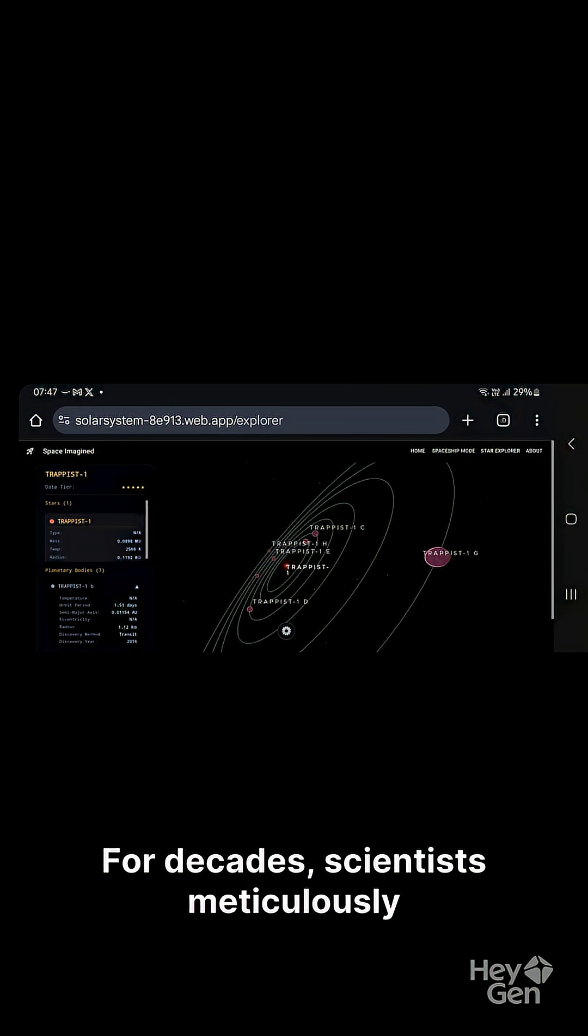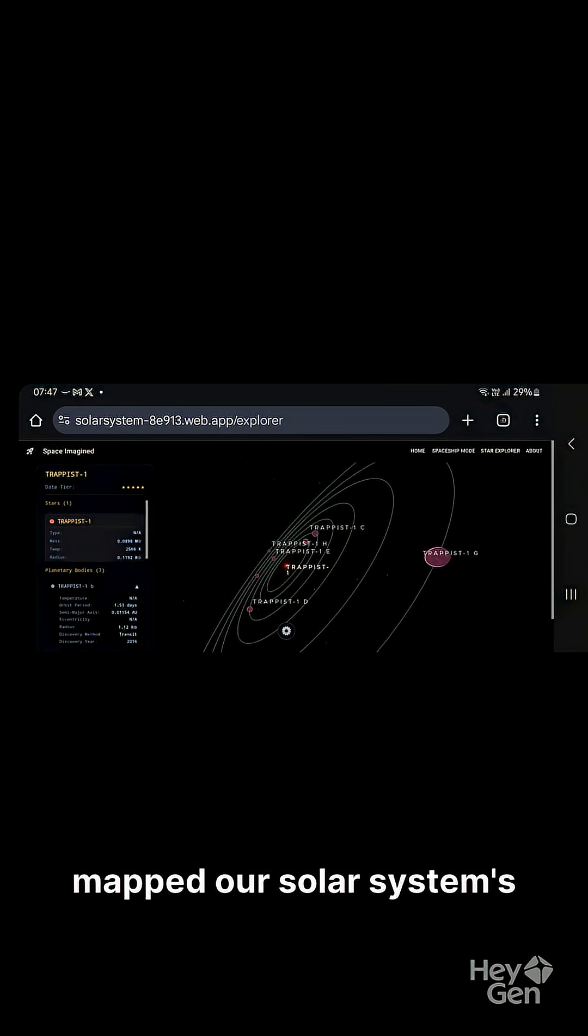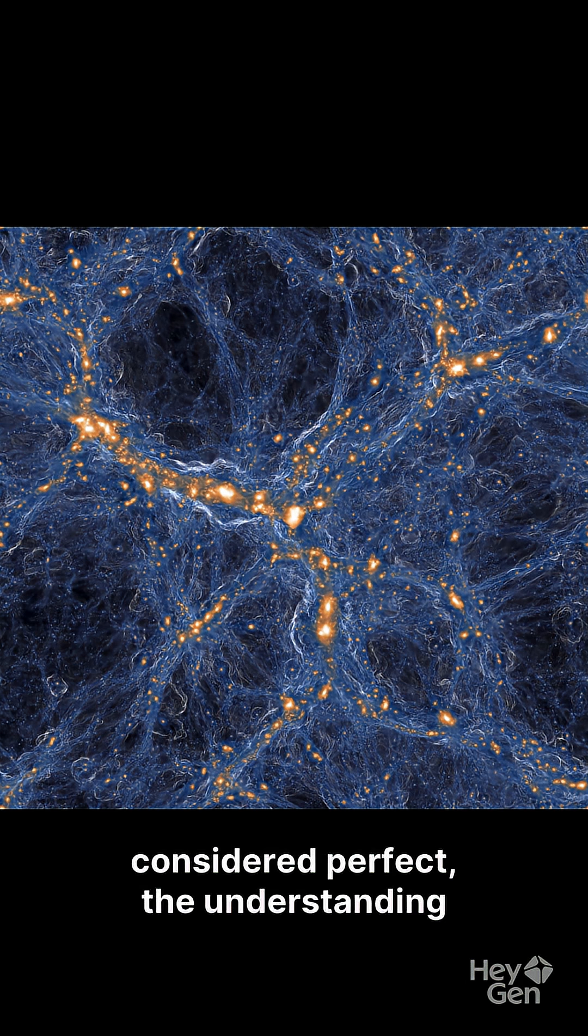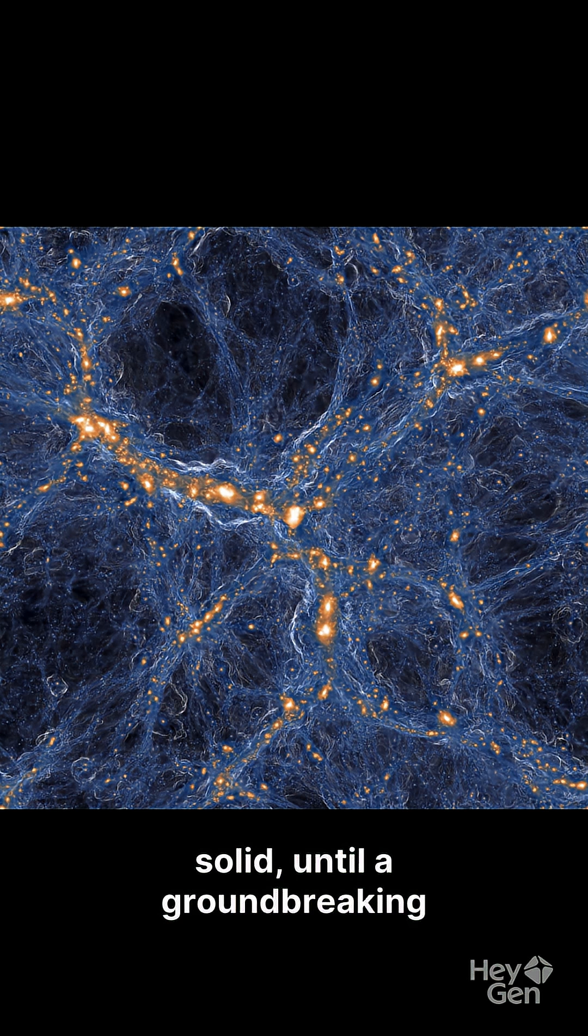For decades, scientists meticulously mapped our solar system's journey through the universe, calculating its speed and direction with incredible precision. The mathematical models were considered perfect, the understanding of our cosmic motion solid, until a groundbreaking discovery challenged everything.